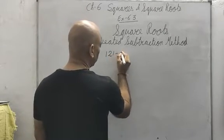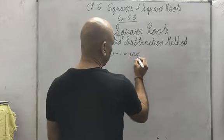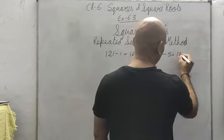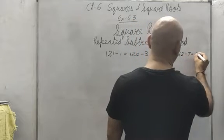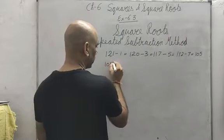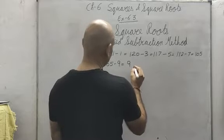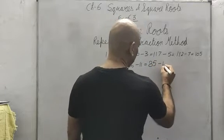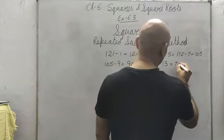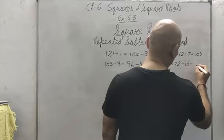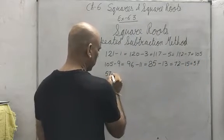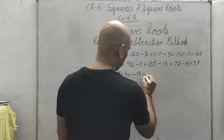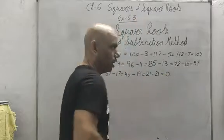For example, take 121. First subtract 1, I got 120. Then subtract 3, I got 117. Then subtract 5, I got 112. Then subtract 7, I got 105. Then subtract 9, I got 96. Then subtract 11, I got 85. Then subtract 13, I got 72. Then subtract 15, I got 57. Then 57 minus 17, I got 40. Then subtract 19, I got 21. And then subtract 21, I got 0.